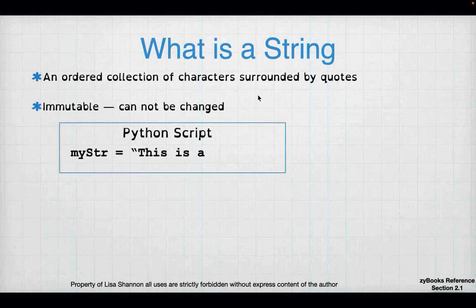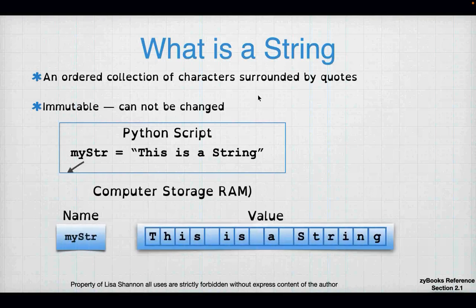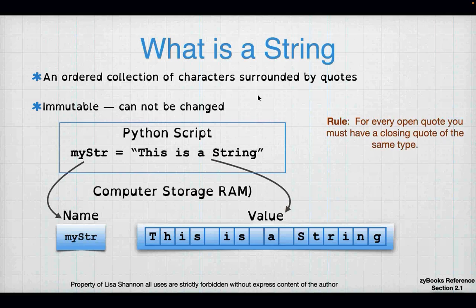What does a string look like in Python? I have a variable 'my_str' equals 'this is a string'. This is what it looks like in computer RAM. Notice there is a space for every character, and space itself is a character — so there is a space between 'this' and 'is', and that space is an element in the list.